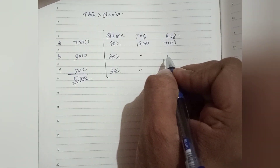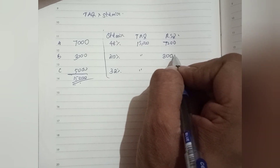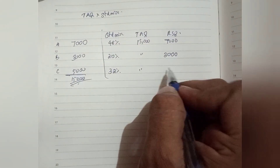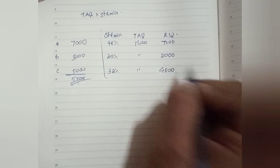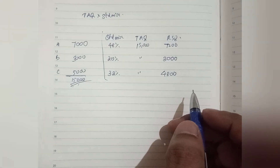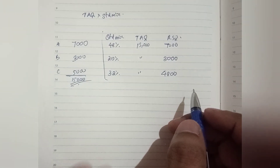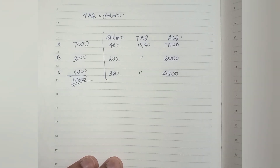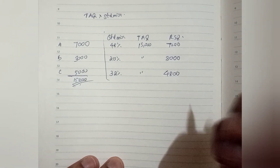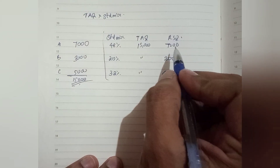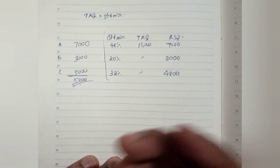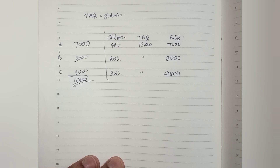7200, 3200, 4800. So we can calculate standard quantity, then we can do the revised standard quantity. This is the table — we can do the balance and other things as in the last video.